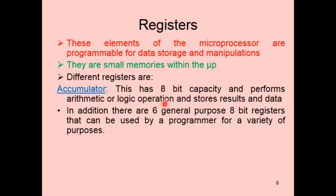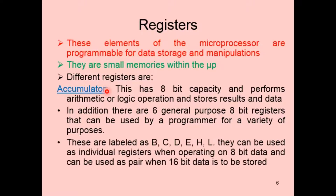Along with the accumulator, there are six general-purpose 8-bit registers used by the programmer for a variety of purposes. These six registers are labeled B, C, D, E, H, and L. They can be used as individual registers when operating on 8-bit data.